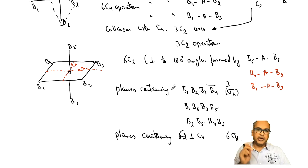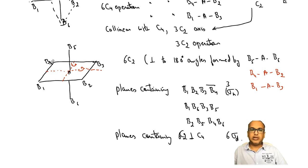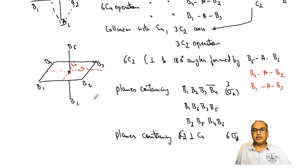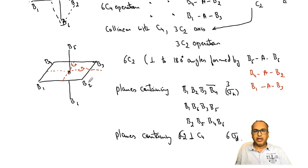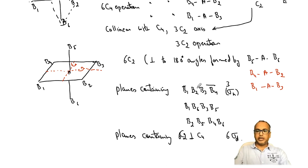These three molecules — ammonia, tetrahedral, and octahedral — should give you enough understanding to locate different proper axes of rotation and planes. The key advice is: list down all atom numbers contained by a particular symmetry element, then find how many such combinations are possible, and write down all symmetry elements and operations accordingly. Thank you very much, this is all for today.